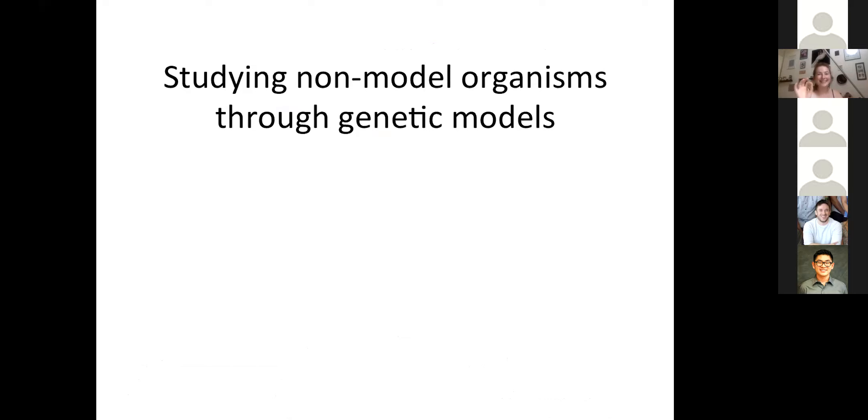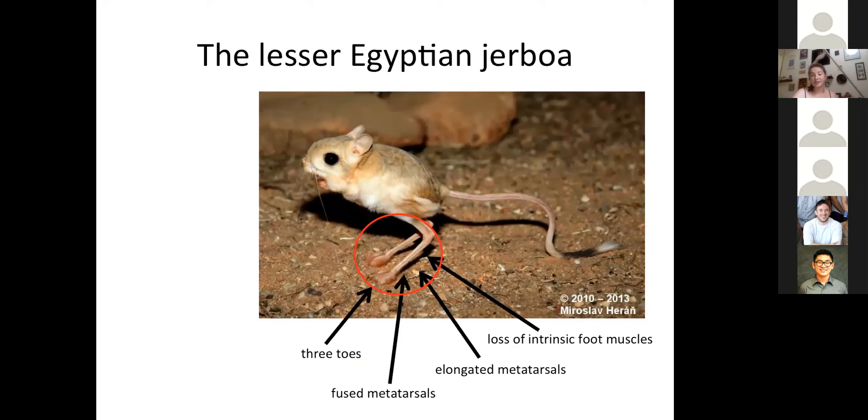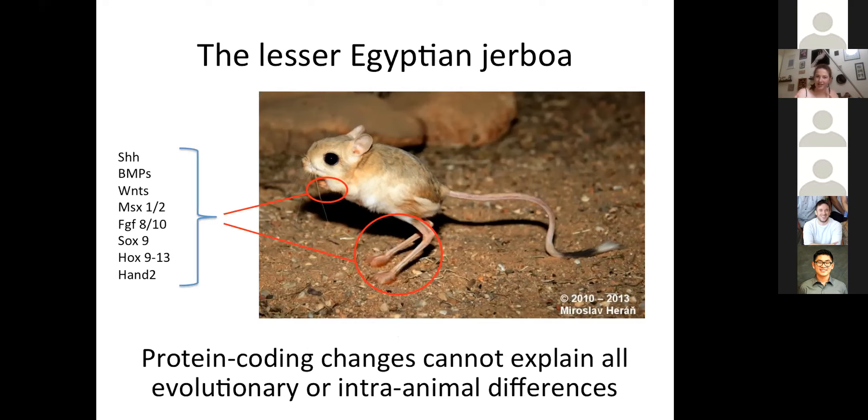So what we have here with the Jerboa is a combination of something that has an extremely divergent morphology and an extremely similar genome. And that allows us to ask two big questions. How do mammals make limbs in general? And also how do you change those instructions over the course of evolution in order to create divergent forms? Unfortunately, it is not easy to study a non-model organism. I don't know how many of you are trying it right now, but it's not always fun. And so the thing that I've been working on throughout my thesis is actually ways of using model organisms to study non-model organisms. The point is I can make a genetic model in a mouse that has Jerboa limbs.